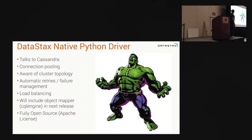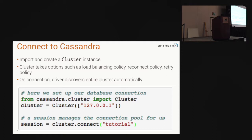Like a lot of other things that we do, it's fully open source under the Apache license — you do whatever you want with it, it's all yours. So the first thing that we're going to do is connect. To do that, we have to import the cluster and create a cluster instance. You're going to pass a list of hosts. This doesn't have to be every machine — in this case I'm looking to talk to the local host so I only have one. If you had a 500 node cluster, you could pass three IP addresses or three host names and it's totally fine — it will discover the entire topology automatically.